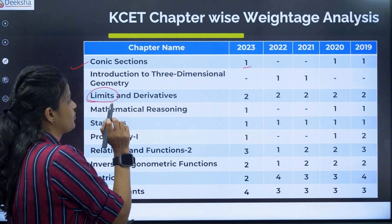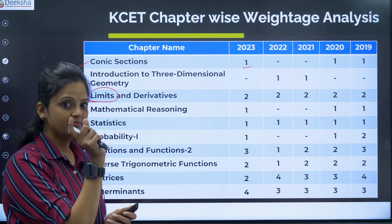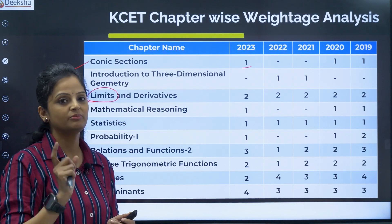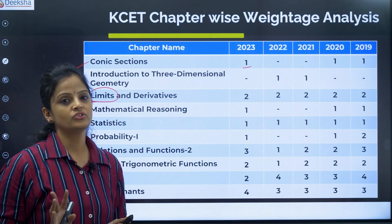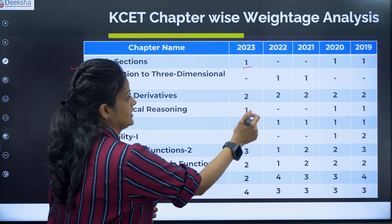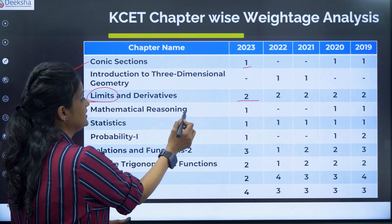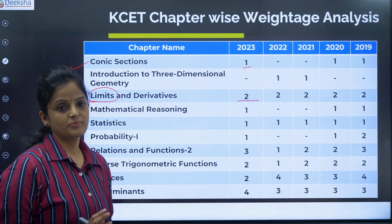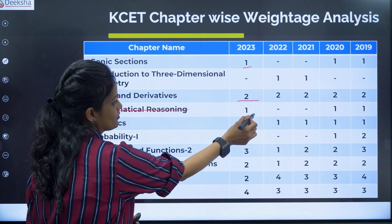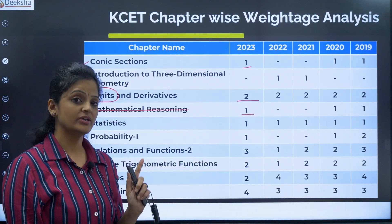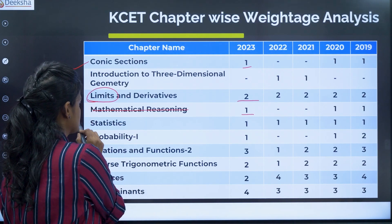Limits is important. Derivatives will be there in second PUC, but the Limits chapter is in first PUC. You will definitely get two to three questions — on average two questions from this chapter. Mathematical Induction is a chapter which has been taken off this year. One question was there in previous years, but this year it is deleted from your portions.